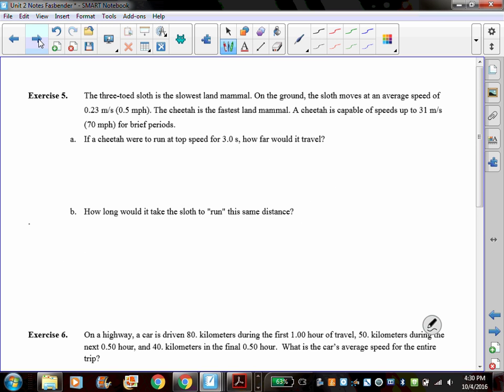Let's do another problem. The three-toed sloth is the slowest land mammal. On the ground, the sloth moves at an average speed of 0.23 meters per second. The cheetah is the fastest land mammal, capable of speeds up to 31 meters per second for brief periods. So if a cheetah was to run at top speed for three seconds, how far would it travel? So let's pull out the knowns. We're going to only have the knowns for the cheetah. We know that the cheetah can run at a velocity of 31 meters per second and can move at that speed for three seconds. And now we want to know how far this cheetah is going to go.